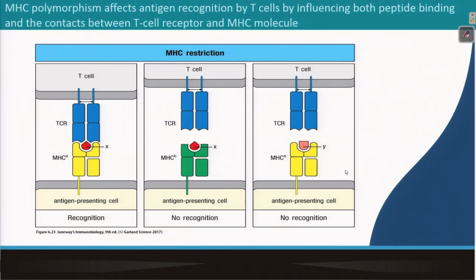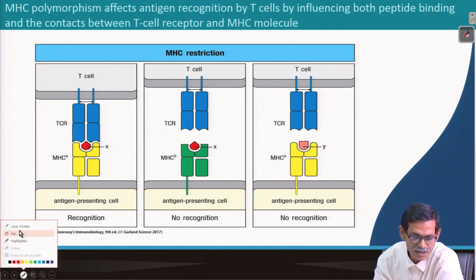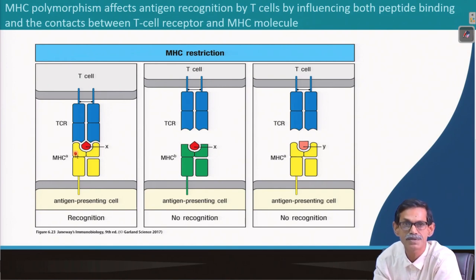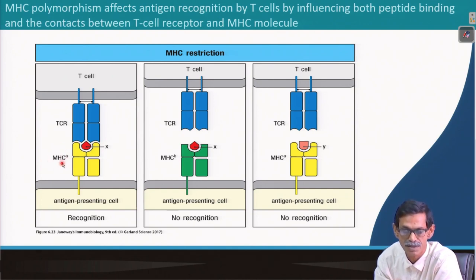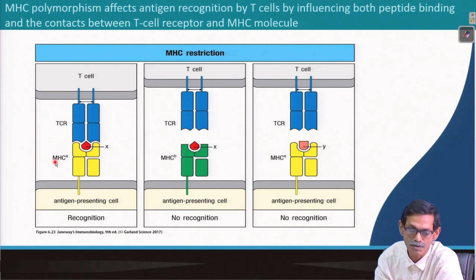If you understand how MHC with peptide and TCR interact, we have a better picture. When antigen presenting everything is perfect — TCR interacting with MHC along with the peptide — you see in this cartoon, which is very straightforward. MHC 1 alpha-1 and alpha-2 presenting antigen X. MHC A and MHC B here are just labels to differentiate between two different MHC molecules; there is no relation with class 1 or 2 — all are MHC class 1.